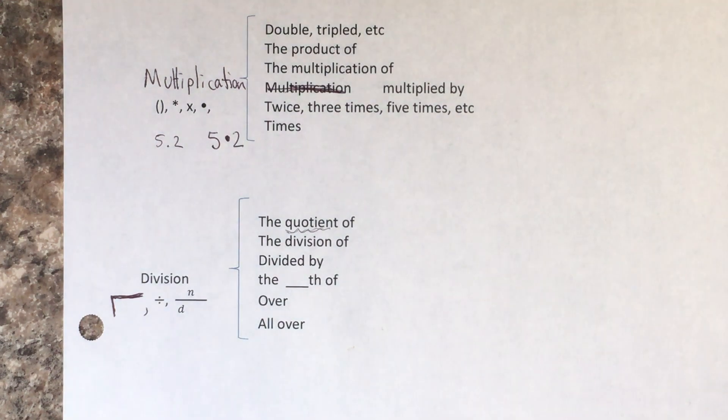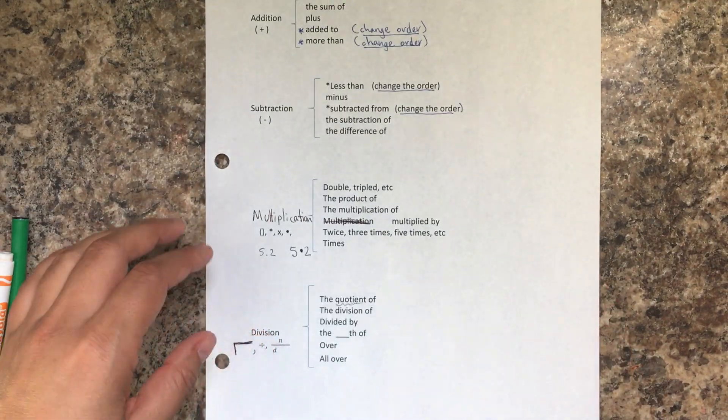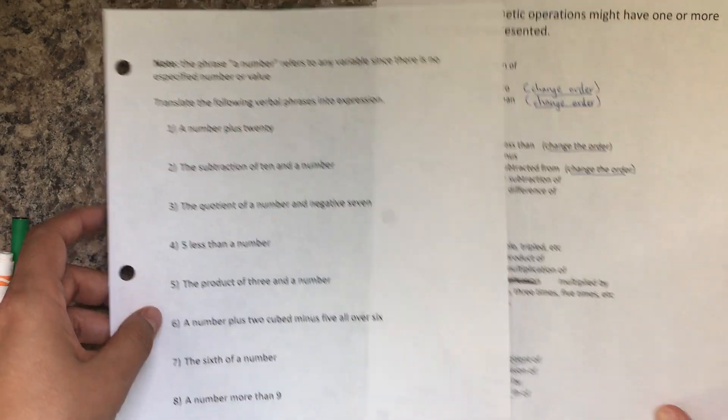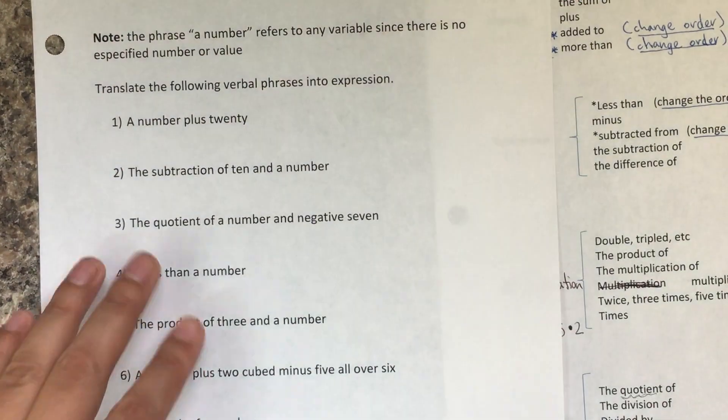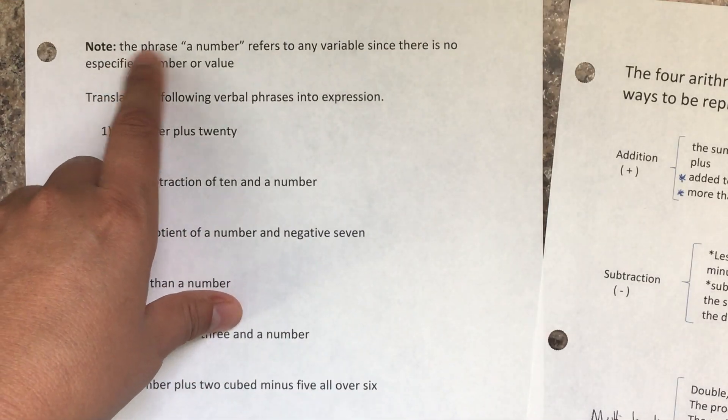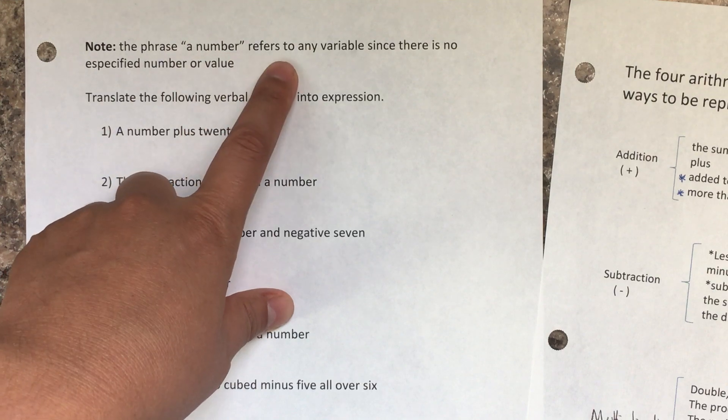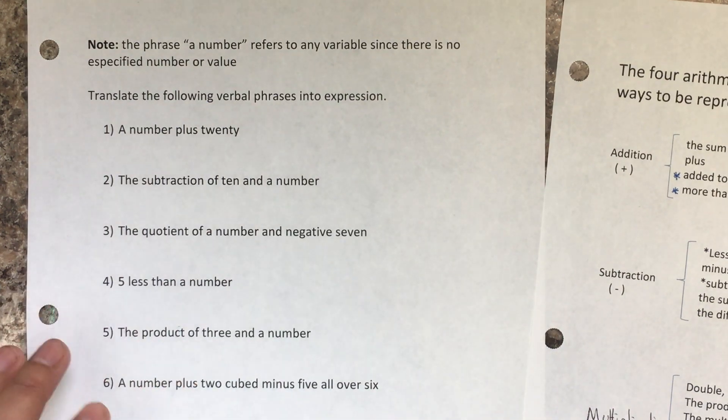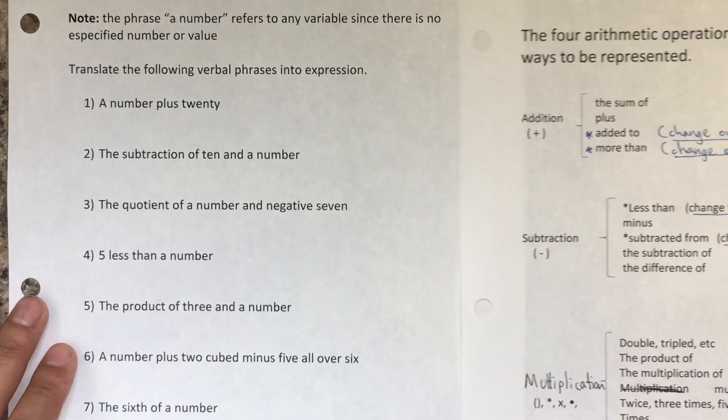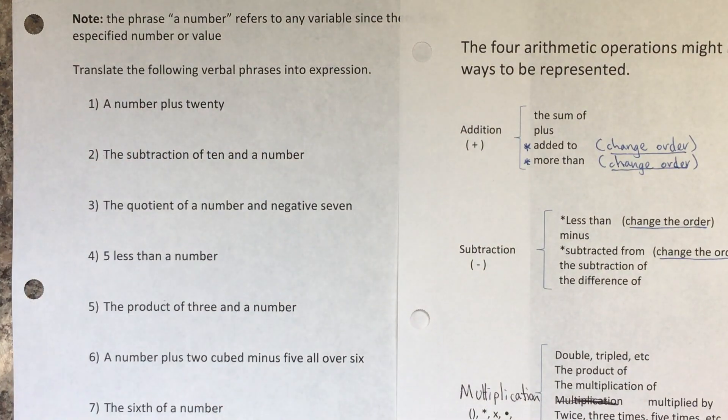Now that you have the general information, you might want to copy it first so that you can have it on the side and follow in a nicer manner. Note the phrase 'a number' refers to any variable since there is no specified number or value. It can be any variable—x, y, z, w, p, q, k. It doesn't matter what variable you use. Usually they tend to use x and y more often. Let's translate the following verbal phrases into expressions.